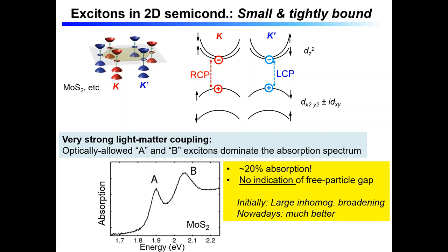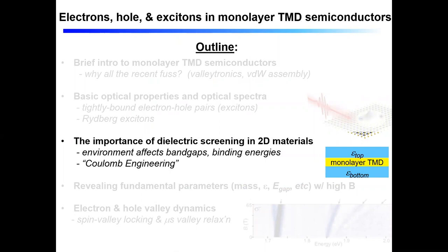Initially back in 2012 or so, these materials exhibited pretty large inhomogeneous broadening, but nowadays with encapsulation we get much narrower linewidths. The primary source of the inhomogeneous broadening was probably chalcogen defects and vacancies, and interaction with the substrate, which is typically SiO2. So let's now talk about dielectric screening.